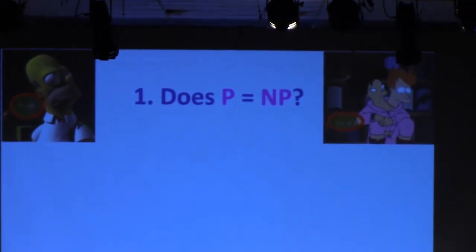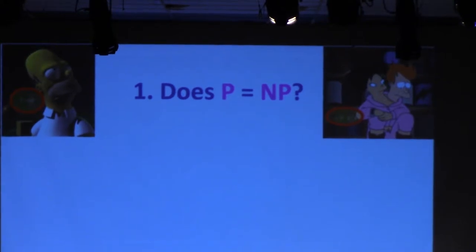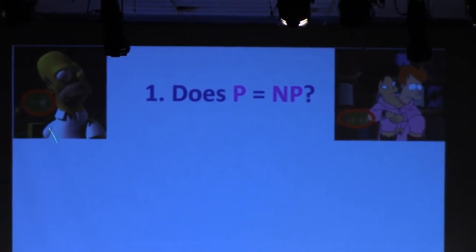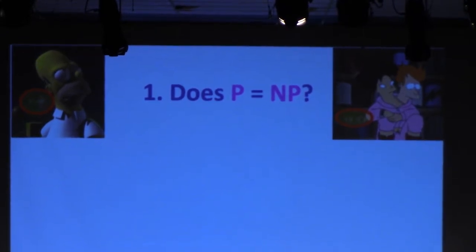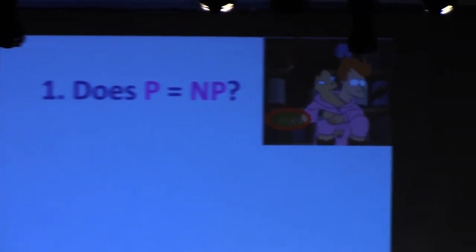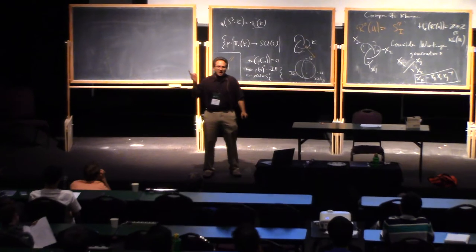Let's start with the famous question of does P equal NP. You can tell this is an important question because it's appeared on both The Simpsons and Futurama, as well as several other TV shows. It's also one of the Clay Millennium Problems — the seven problems where you get a million dollar prize — which includes the Riemann hypothesis, the Yang-Mills mass gap, and the Poincaré conjecture, which was solved by Perelman, although he declined the prize. My personal opinion is that P versus NP is far and away the most important of the seven.